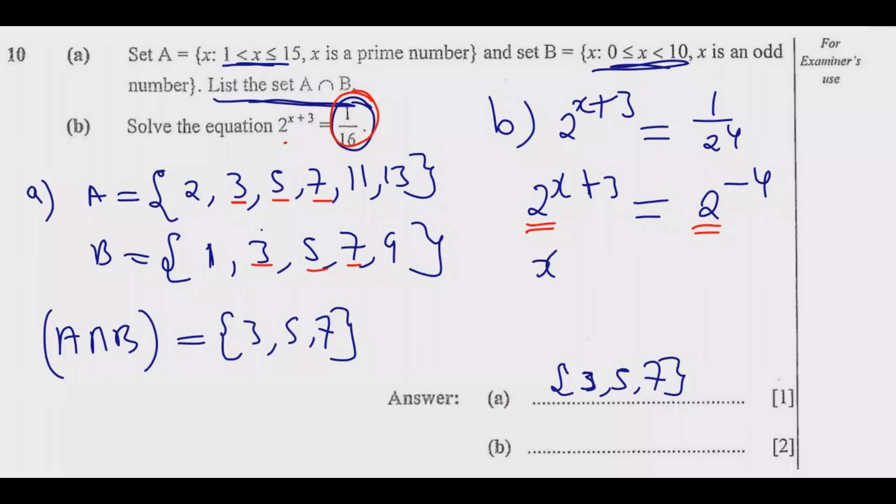So what it means now is we're going to have x + 3—let me use a different color to distinguish—the powers must equal negative 4. At this point we just need to solve for x. So x equals negative 4 minus 3.